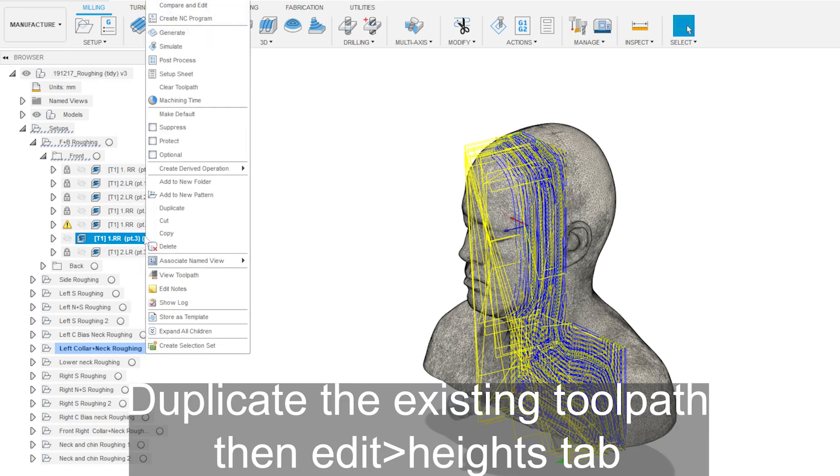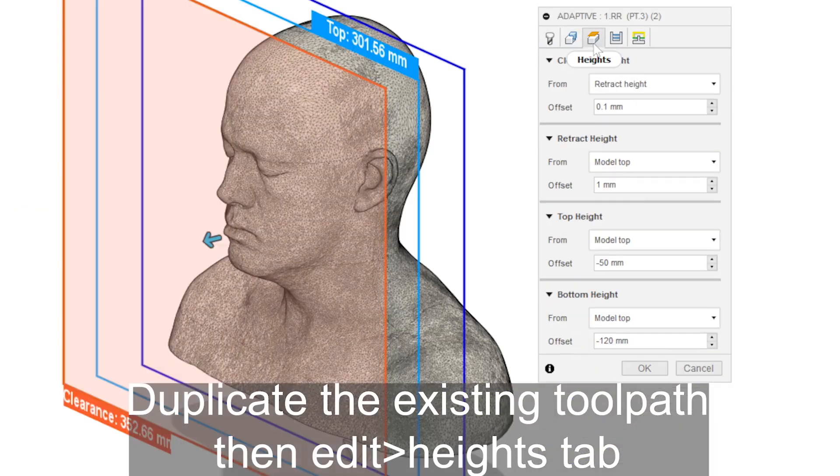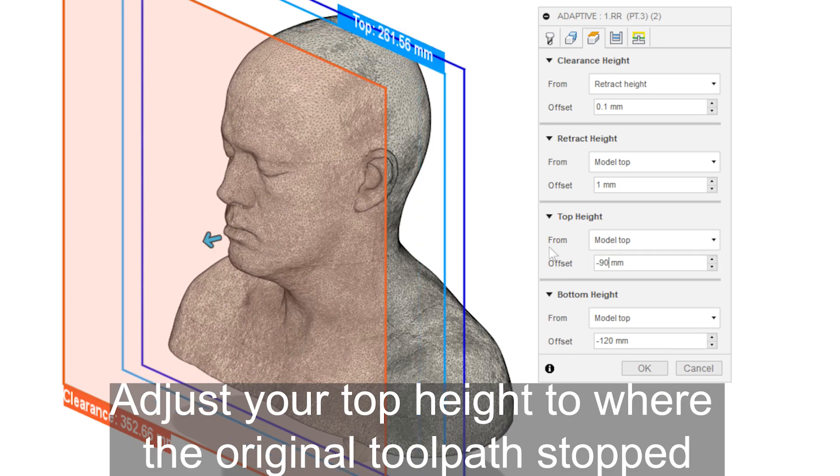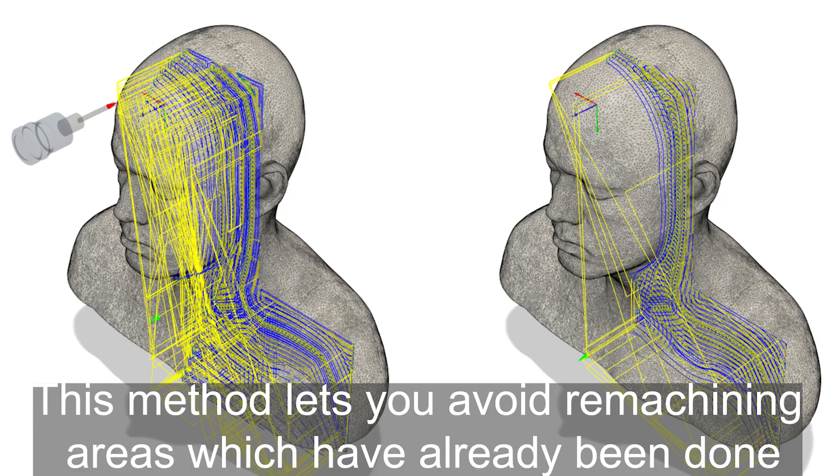Let's start by duplicating the existing tool path, then edit and enter the heights tab. Now adjust the original top height to where the tool path has stopped. This method will let you avoid remachining areas which have already been done.